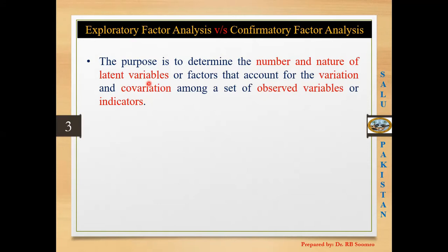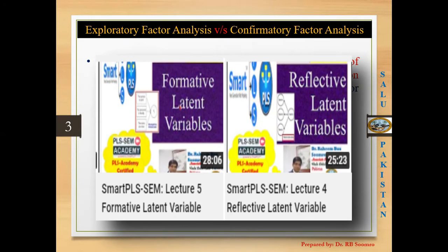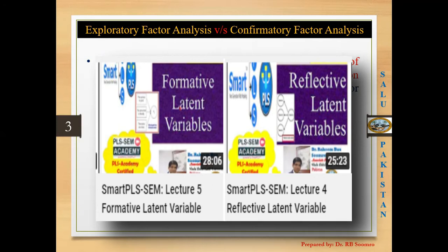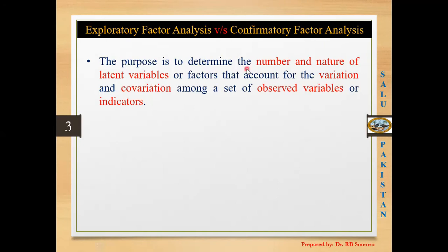Any type of variable which we cannot directly measure is called a latent variable. I have two videos available about latent variables — there are two types: reflective and formative. Both videos are available if you find time. Another purpose of both EFA and CFA is to account for the variation and covariation among the observed variables. Observed variables are those which you can directly measure, like age or income.